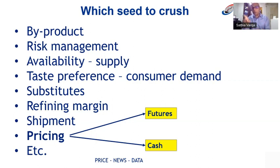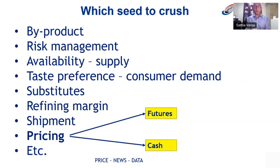Other factors include taste preference — in some countries, certain oils feature prominently in local cuisine. Substitutability matters: can you easily switch to another oil when packaging and distributing to supermarkets? Refining margin is also key — if the spread between crude and refined palm oil is very narrow, you're making very little money. And finally, shipment availability. When we speak about pricing, there are two types: futures and cash. Cash is a spot transaction — willing buyer, willing seller. But in some commodity markets, a futures contract is also available.